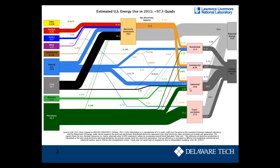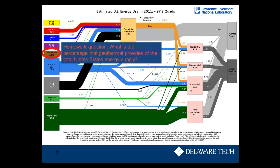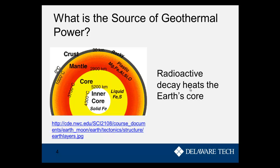The first thing we want to discuss is geothermal. One of your homework questions will be to calculate the percentage that geothermal provides to the total United States energy supply. The inner core of the Earth is much hotter than the crust or mantle, and what drives this is radioactive decay, which heats the Earth's core, along with pressure. Radioactive decay is the sustainable source we could extract — that's what's really driving geothermal power.